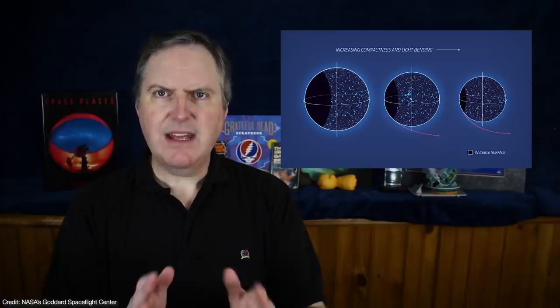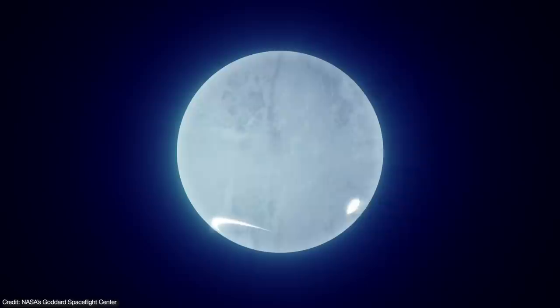Pulsars are so dense, their gravity warps the fabric of spacetime around them. This has the effect of letting us see parts of the pulsar's far side.